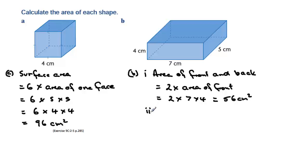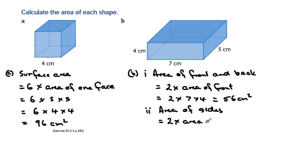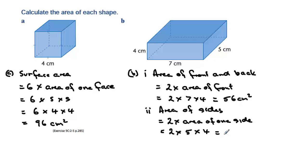We're going to have to do this two more times to get the top, the bottom, and the two sides. Working out the area of the sides next: two times the area of one side, because they're identical again. Looking at the side, it's five centimetres long and the height is four centimetres, which gives us a total of 40 centimetres squared.